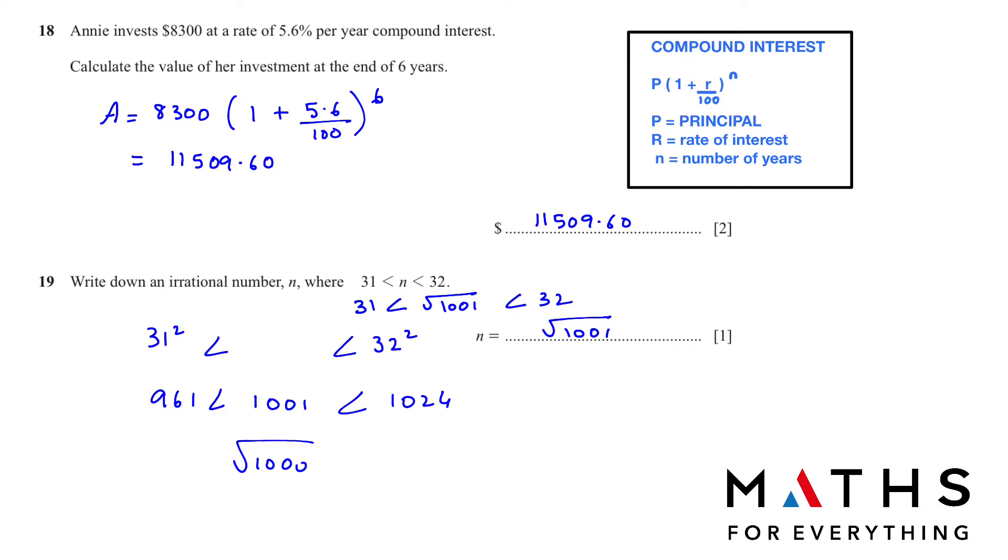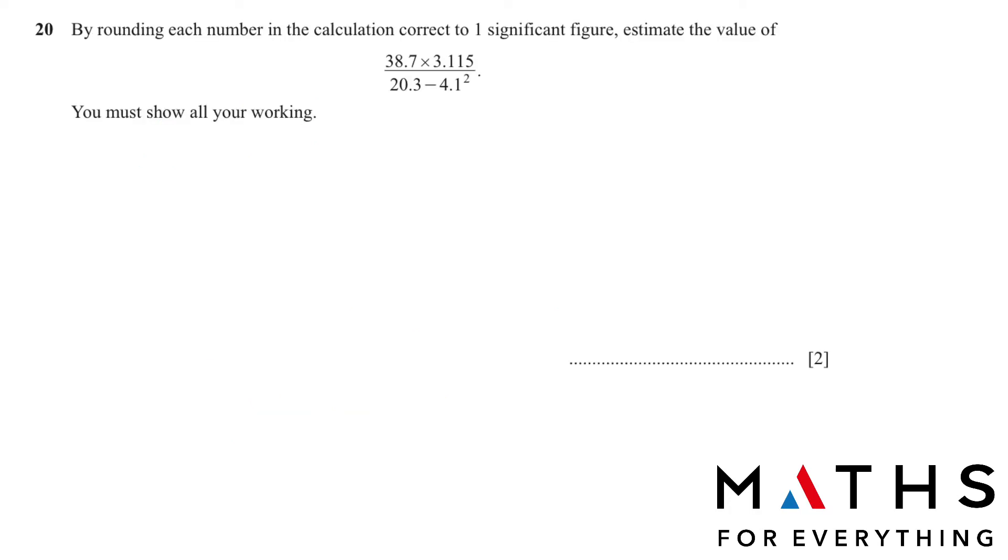Question number 20: By rounding each number in the calculation correct to one significant figure, estimate the value of these numbers given to us. The first one is 38.7. What's the first number here? If you have 5 or more than 5, you add one. The first number is going to be 3 plus 1, which is 40. The other number we have is 3.115. The first number is 3, the second number is 1, less than 5, so we leave it as 3.